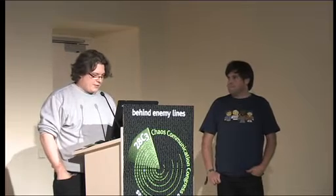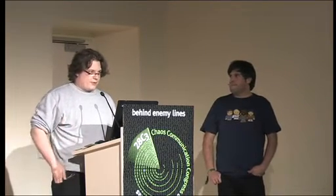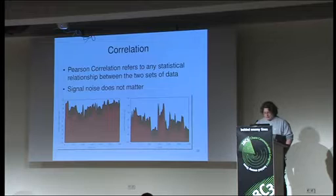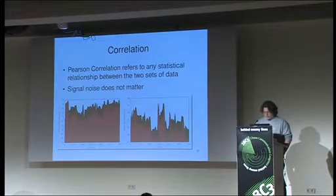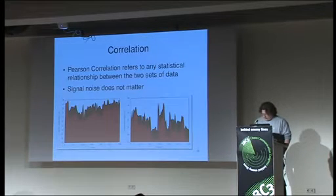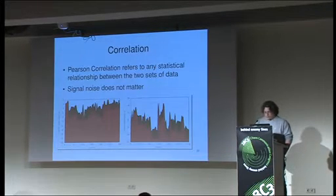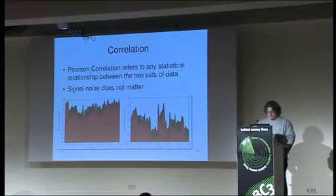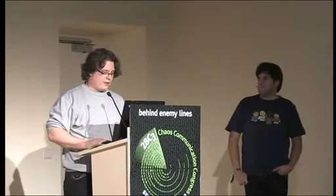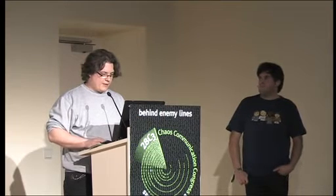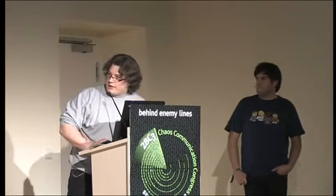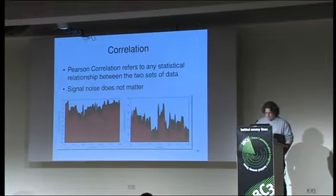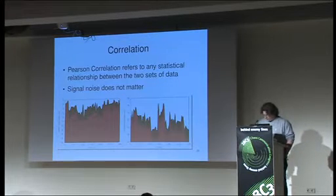The mathematical method is Pearson correlation. Pearson correlation gives you a value from 1 to minus 1 — 1 represents a perfect match. The closer you get to zero, the less relationship there is. In this context, the signal noise from other devices doesn't matter. At the bottom you can see the overlaid graphs after applying the Pearson correlation.